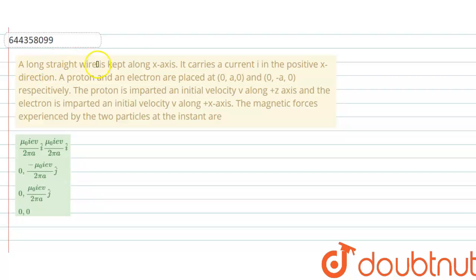A long straight wire is kept along its axis. It carries a current i in the positive x direction. A proton and an electron is placed at (0, a, 0) and (0, -a, 0) respectively.